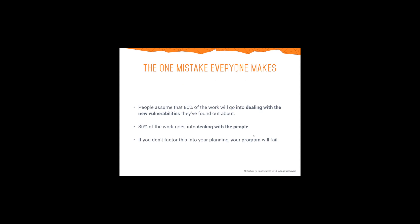The one mistake that everyone makes is that people generally think the bulk of the effort around running a bug bounty program is going to be dealing with the new vulnerabilities they find. Definitely that's something you need to plan for, but it's not actually the bulk of the effort. The main piece goes into dealing with all the people trying to help you — especially when their reports are invalid, out of scope, or duplicate — because you've got someone on the internet taking time to proactively reach out to help you, and you really owe it to them to close the loop.